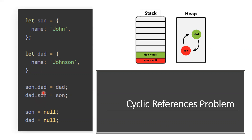Once the usage is done, I am assigning nulls here. If you observe, no pointer from the stack to the heap is pointing to these objects — we declared null. But the objects in the heap are pointing to each other. The reference counting algorithm doesn't work here because it comes to release an object but identifies that someone is pointing to it. It goes to the dad object and identifies it is being pointed to by son. So it will never release these objects. This is the circular reference problem.